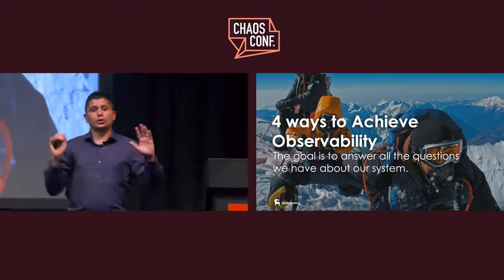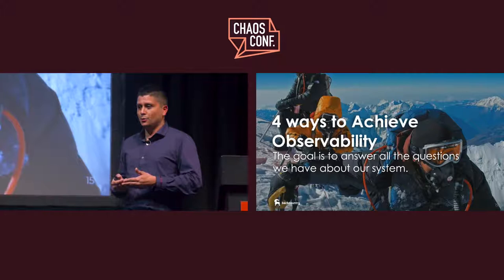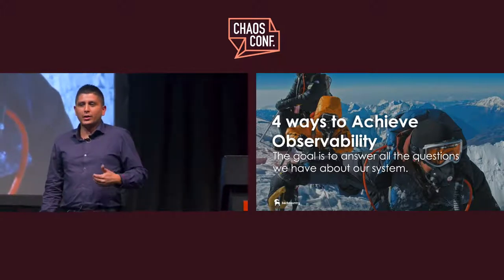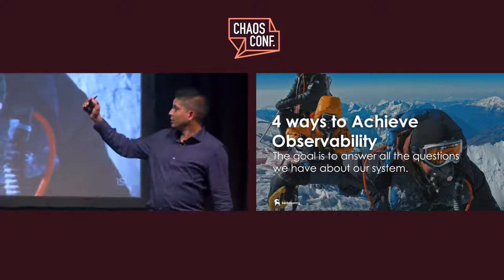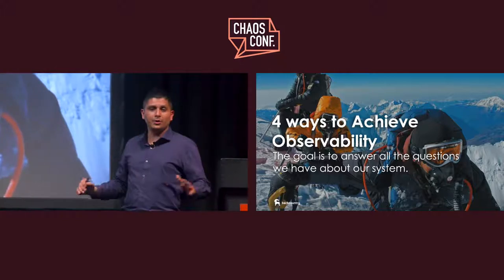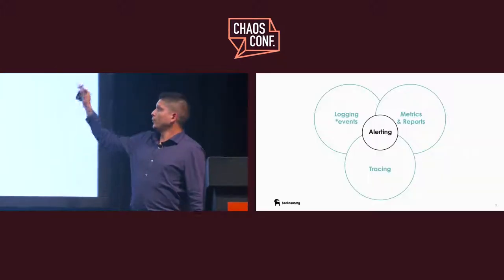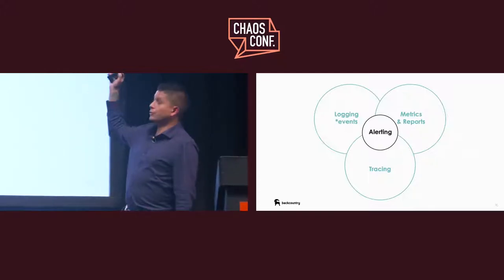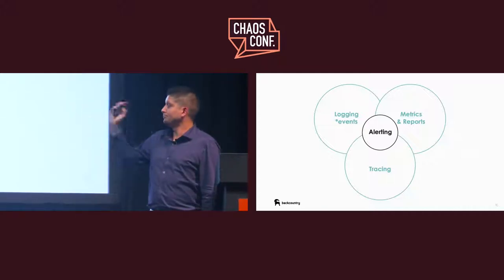Now let's look at four ways to achieve observability, because when you're running a test or something's happening in production, you want tools to answer all the questions you have about your system — and by all I mean all questions. The four areas are: logging, metrics and reports, alerting, and tracing.